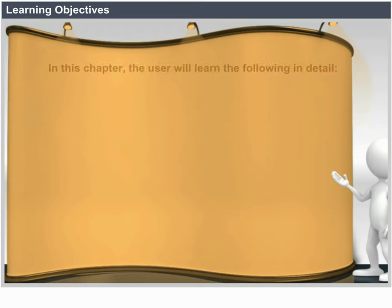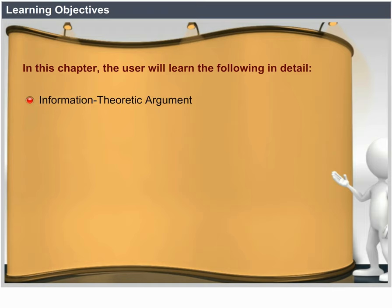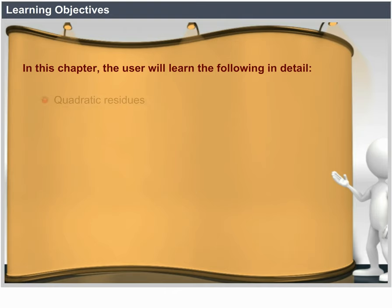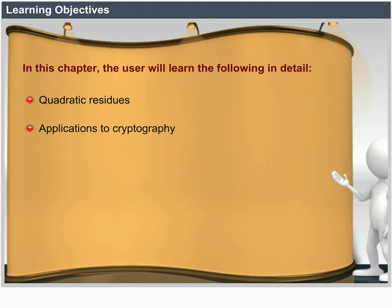Learning Objectives. In this chapter, the user will learn the following in detail: Information Theoretic Argument, Adversary Argument, P and NP, NP Completeness and Reduction, Primality Tests, Quadratic Residues, Applications to Cryptography, Lower Bound Theory, and Information Theoretic Bounds.